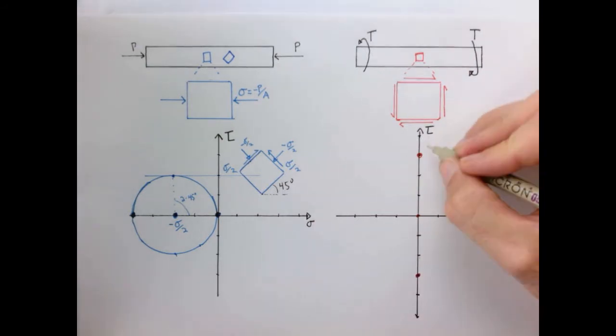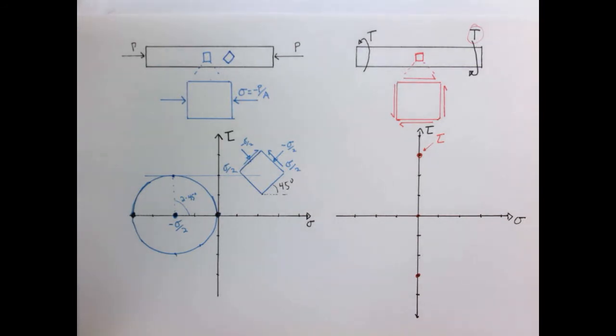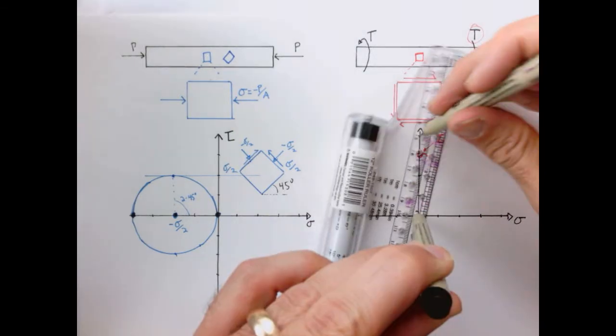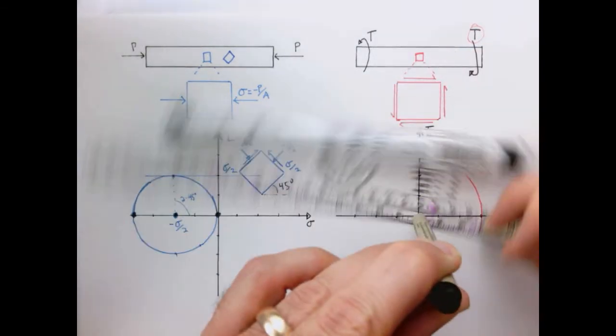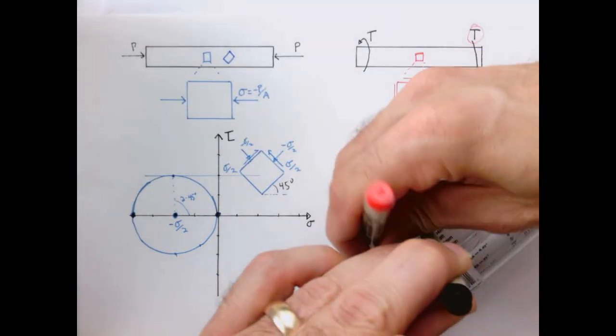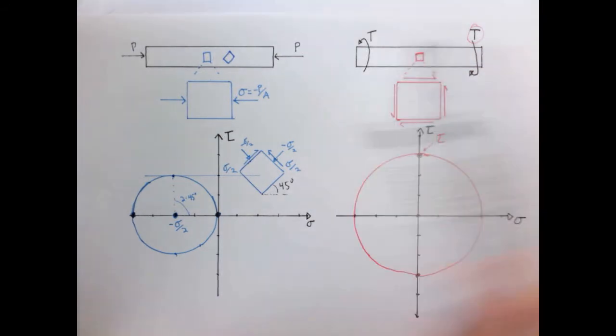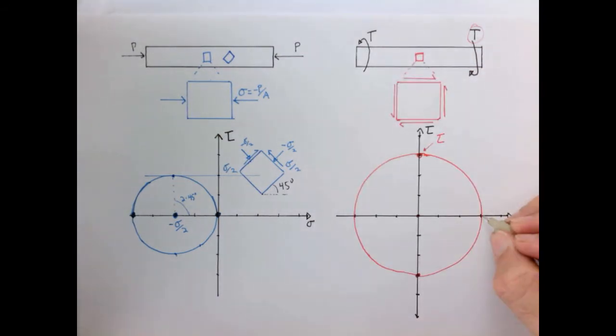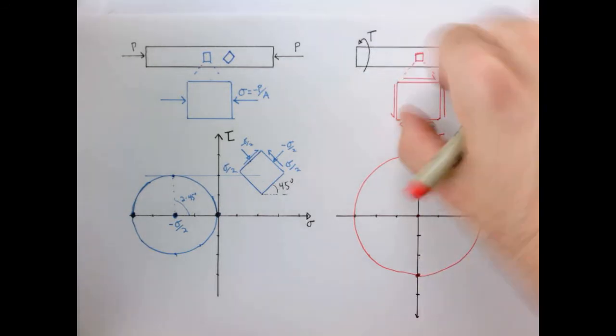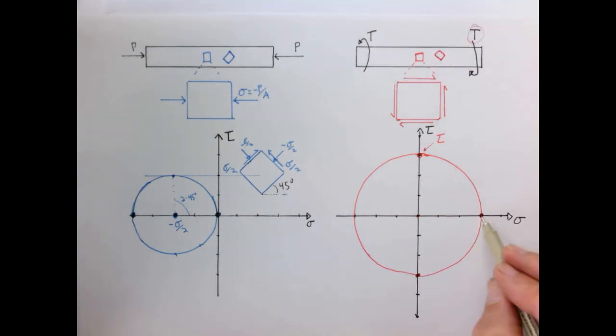And here, what this value is of the shear stress is just related to the total applied torque. And we have to go back and look at our formulas for a circular bar in torsion. But now I've got the center and two points on my circle, so it's easy to draw. So there's our circle with our interesting point located here, which means that if I rotate our element 45 degrees in this direction, I would have a maximum tensile stress whose magnitude would also be the same as the shear stress tau.